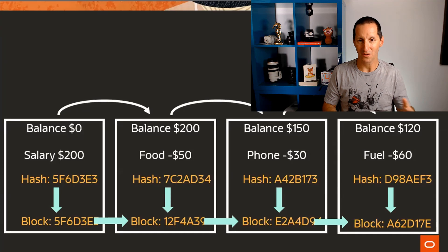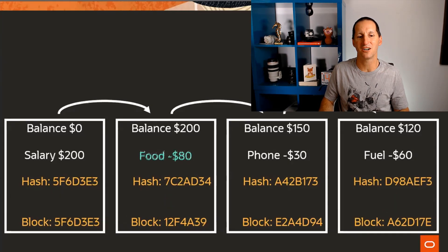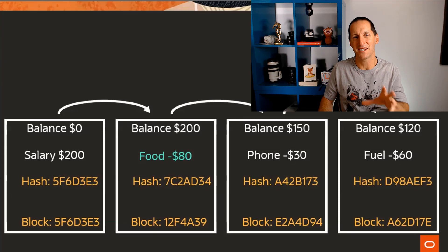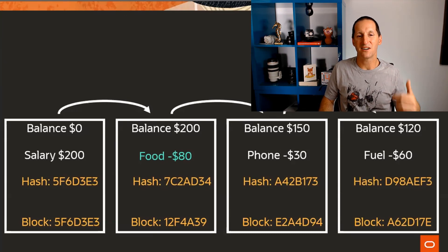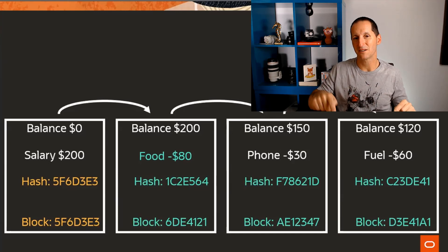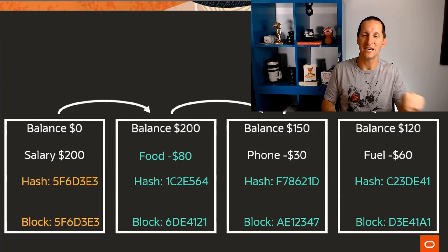Why is this really good for security? If someone wants to tamper — say with my food transaction, changing it from 50 to 80 spent on food — they would have to regenerate the hash for that transaction, but also regenerate the hash for that block, which implicitly means regenerating the hash for every subsequent block. The hashing function is expensive to do, and that's the premise behind blockchain: the cost of tampering is prohibitive.